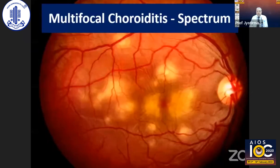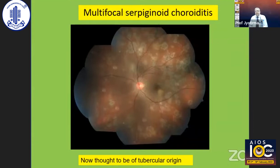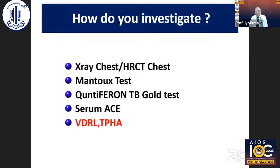These are multifocal choroiditis cases. Think of the possibility of APMPPE — acute posterior multifocal placoid pigment epitheliopathy — multifocal serpiginous choroiditis, sarcoid, and lastly syphilis. These multifocal pigmented lesions represent multifocal serpiginous choroiditis, which is now thought to be of tubercular origin. Here you should do X-ray chest, HRCT chest, Mantoux test, Quantiferon TB-Gold test, serum angiotensin-converting enzyme, and VDRL and TPHA to rule out syphilis, which can produce placoid lesions.